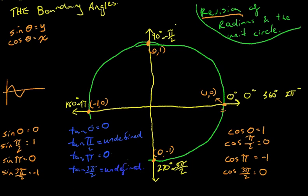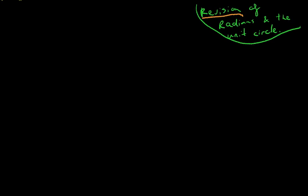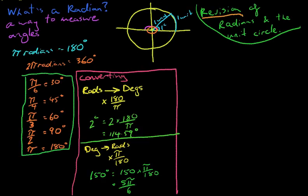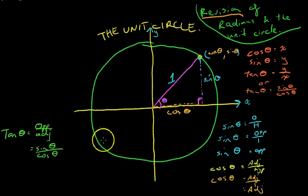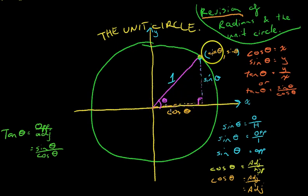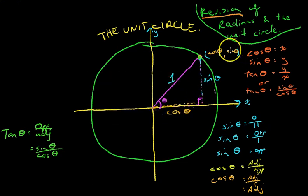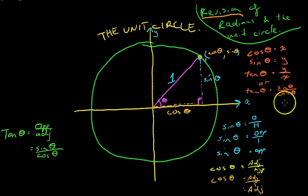Okay, this has truly been a random ramble with a few mistakes along the way. But remember, this is all revision from last year. So: we talked about what a radian was, then we made sure we can convert radians to degrees and degrees to radians. We talked about what the unit circle was and figured out that cos theta equals our x value, sin theta equals our y value, and tan theta equals y divided by x or sin theta over cos theta.